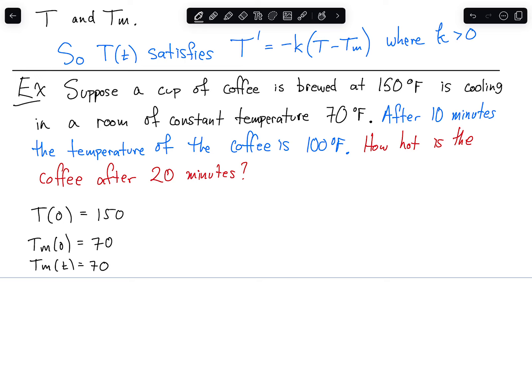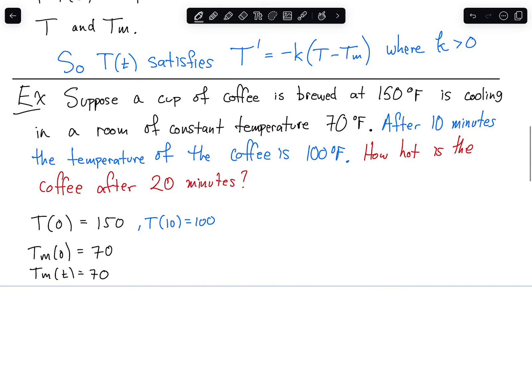All right. We also know from the blue sentence that T of 10 is 100, and then we are looking for how hot the coffee is after 20 minutes. So let's see if we can set up a differential equation and then start looking for what information we might need to find, given the information that we have. So our differential equation is T prime is equal to negative K times T, the function we're looking for, minus Tm, which is 70. So let's see. I think that might be separable.